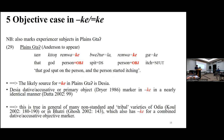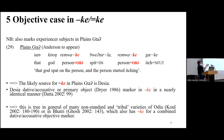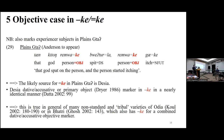Experiencer subjects, as we saw in Sora, get marked morphologically as objects in the head-marking system. That's also true in Plains Gutob in the dependent marking system — they will mark experiencer subjects like a morphological object.